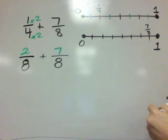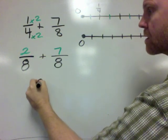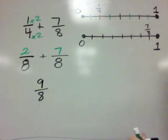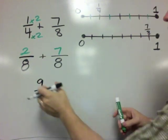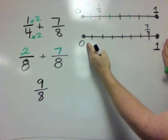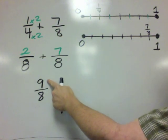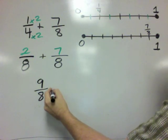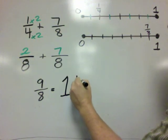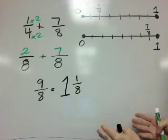Now we're ready to add these two fractions together. 2 plus 7 equals 9, so we have 9 eighths. Remember what this means: 9 eighths means it takes 8 fractional parts to equal 1 whole, and we have 9 fractional parts. So that means we have enough to equal 1 whole, plus we have 1 little eighth left over, and so the answer is 1 and 1 eighth.